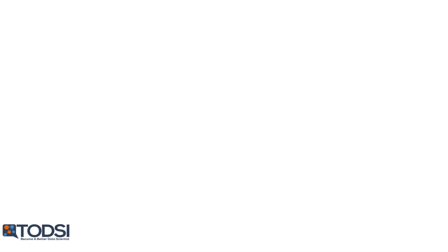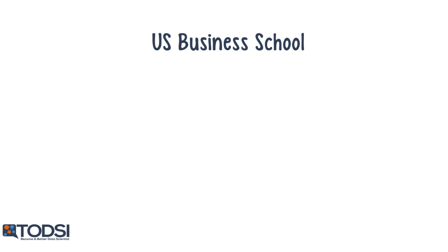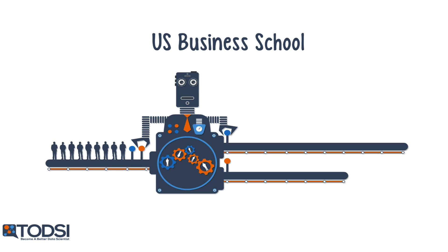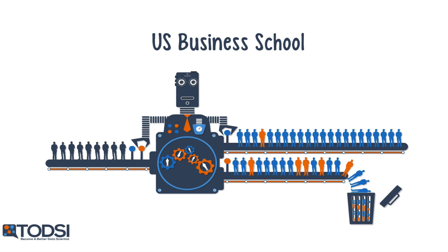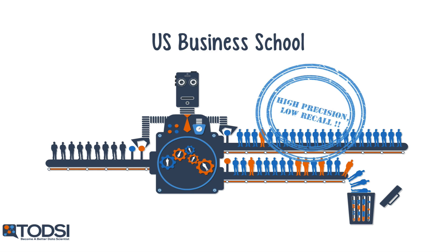As an additional example, let's consider a model that examines a pool of applicants for a top 5 US business school and determines which students to accept. Accepting a student is a positive classification; rejecting is a negative. Since business schools have very strict entry requirements, only the very best applicants will be accepted. Given the extremely low number of false positives, the model will have high precision. However, there will be many qualified students who just miss out, representing false negatives, so the model will have low recall.